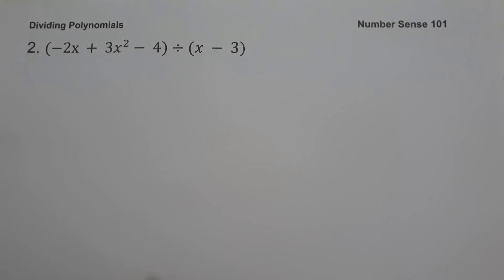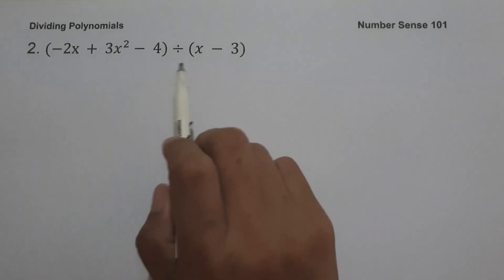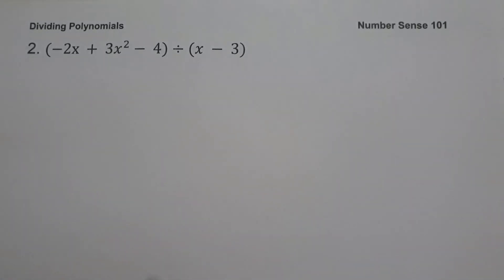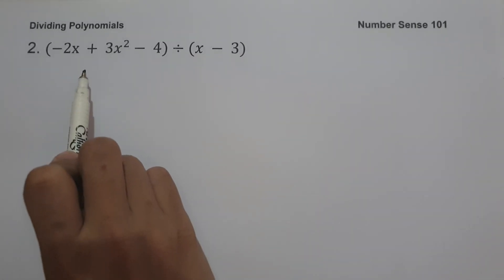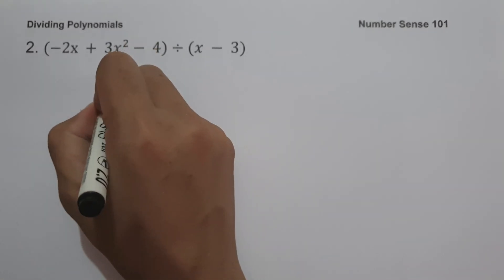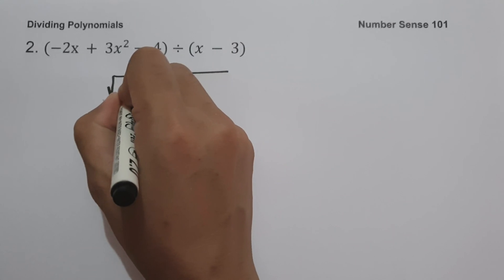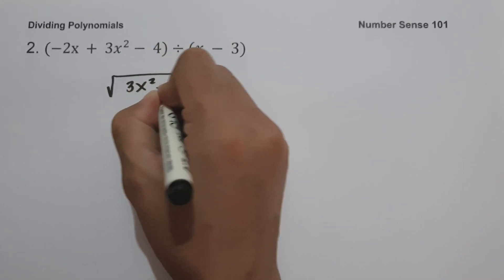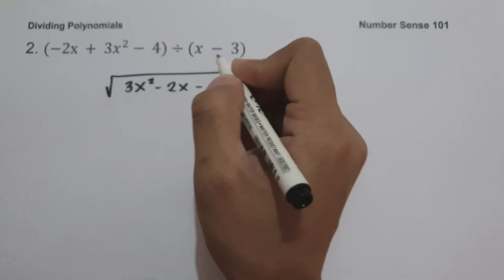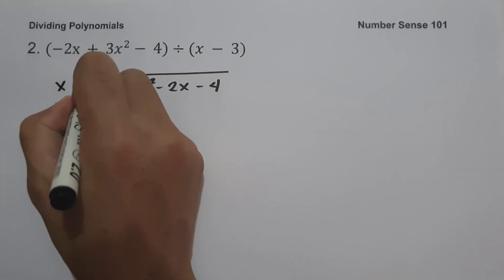On example number two, we have the quantity negative 2x plus 3x squared minus 4, divided by the quantity x minus 3. Since our divisor is a binomial, we are going to use long division and we are going to write our dividend in decreasing power of the variable. So let us have 3x squared minus 2x minus 4 divided by x minus 3.